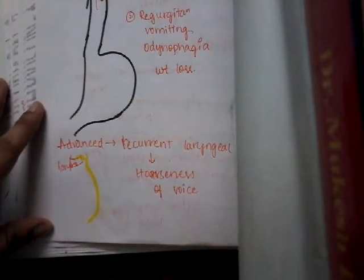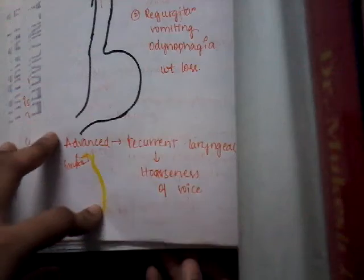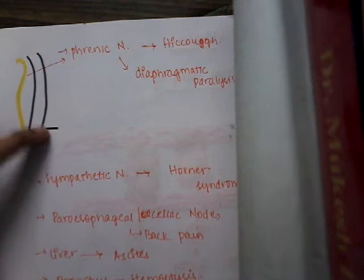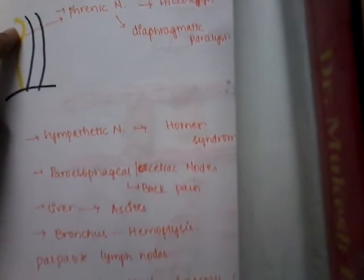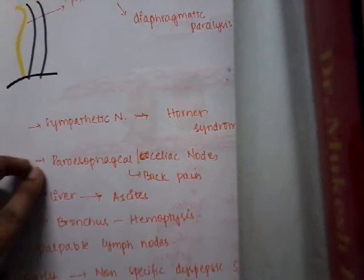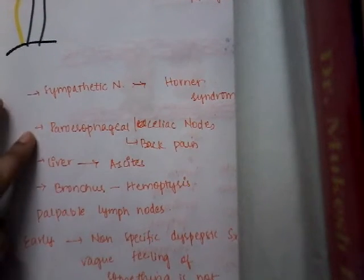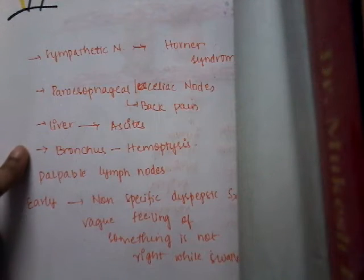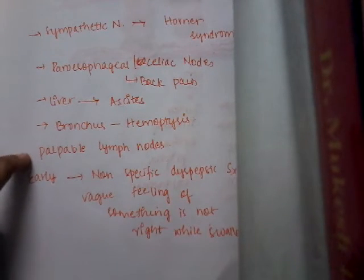In advanced disease it spreads to the surrounding structures through direct spread. Whenever it spreads to the recurrent laryngeal nerve it causes hoarseness of voice. If it spreads to the phrenic nerve it causes paralysis of the diaphragm and hiccups, as the phrenic nerve supplies the diaphragm. If the sympathetic nerve is affected it causes Horner's syndrome. If para-esophageal or celiac lymph nodes are involved it causes back pain. If the liver is involved it causes ascites, and if the bronchus is involved it may cause hemoptysis. Palpable lymph nodes may also be seen.